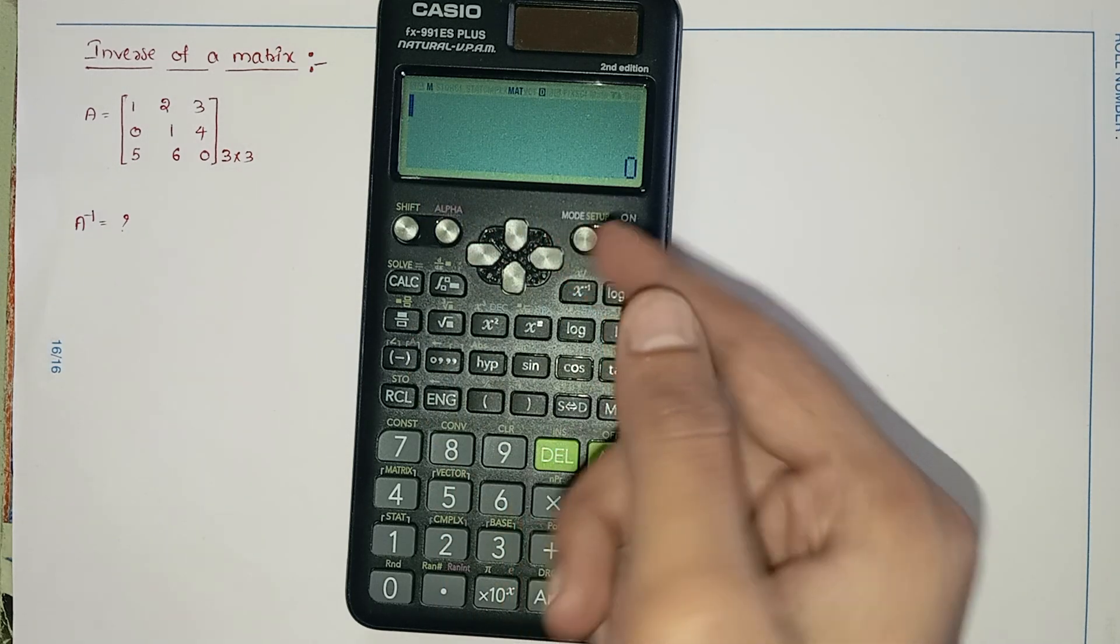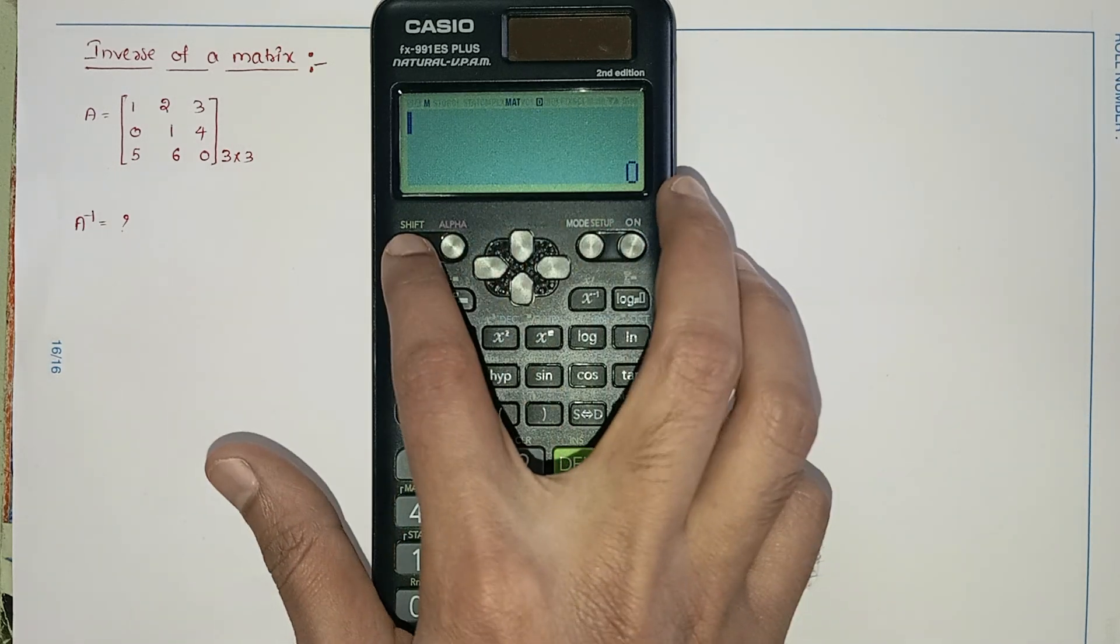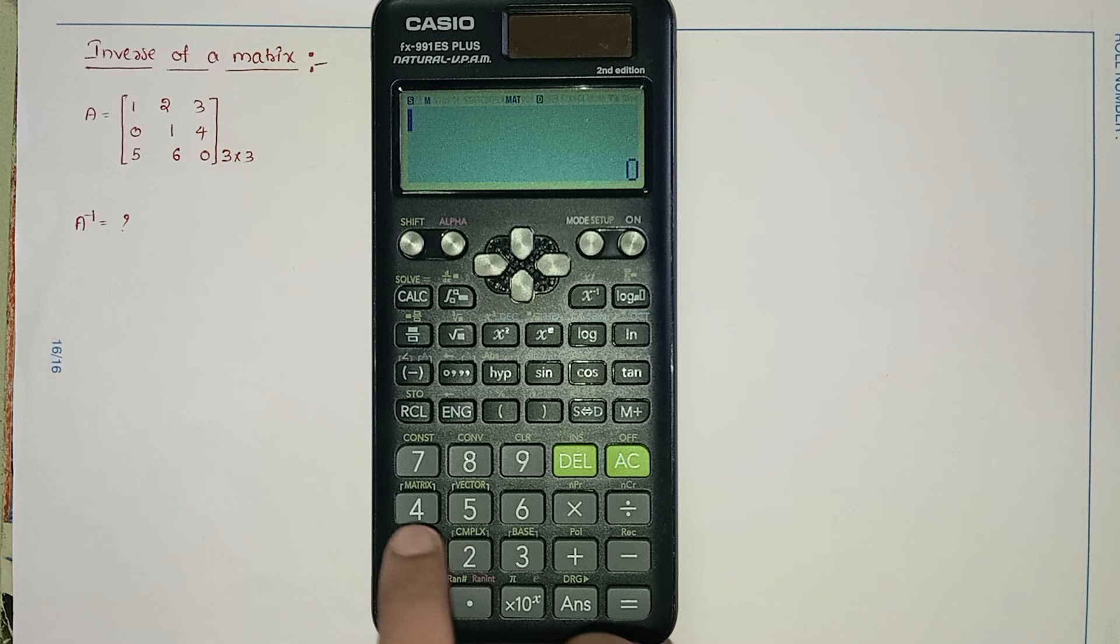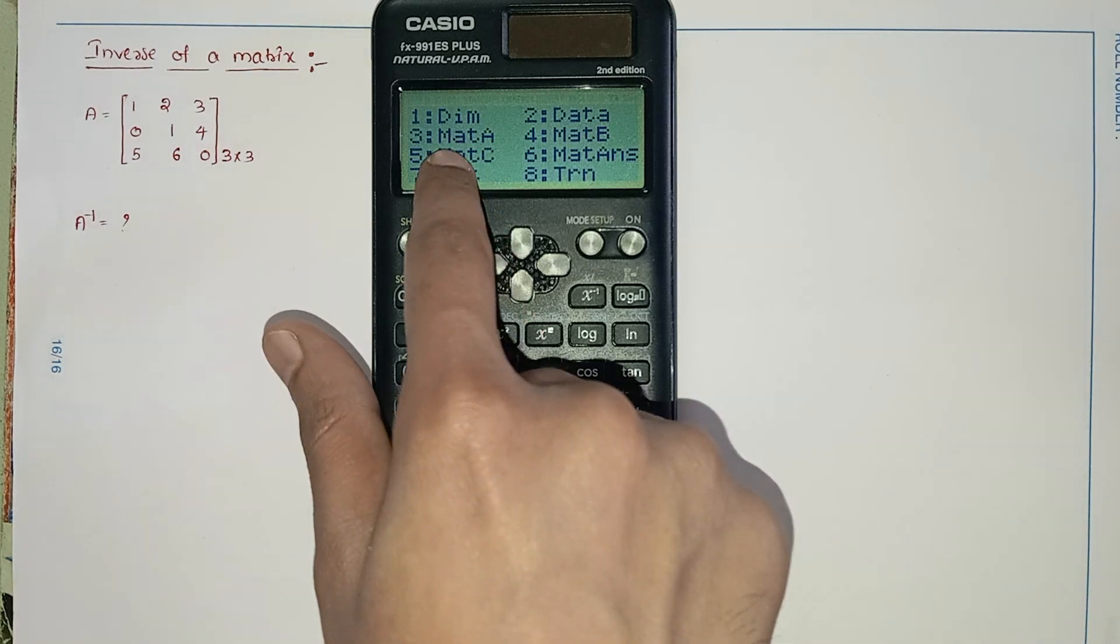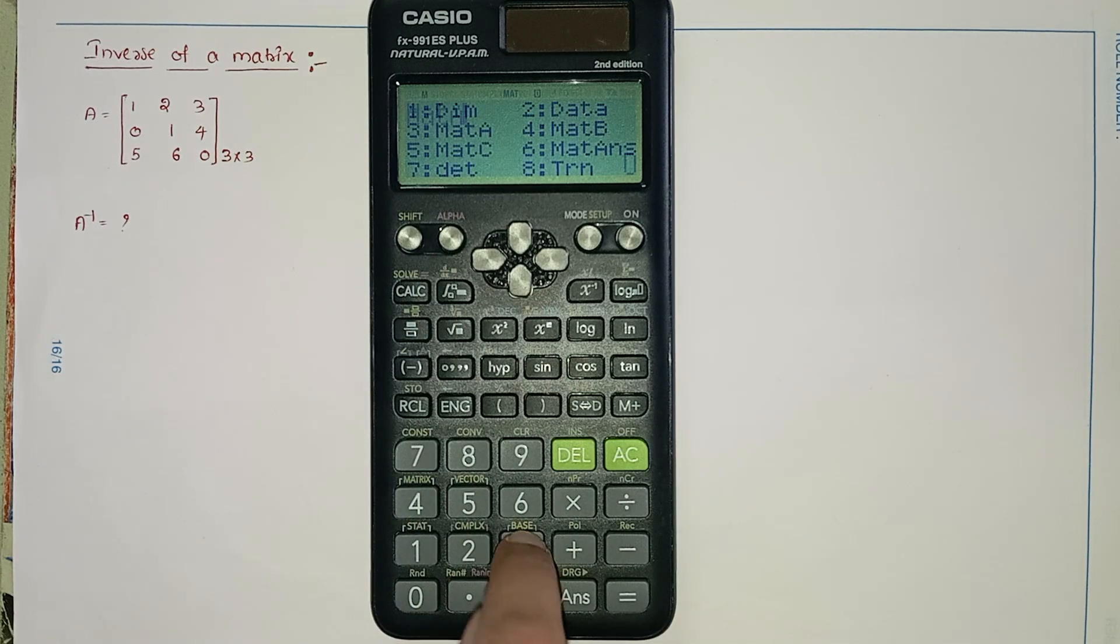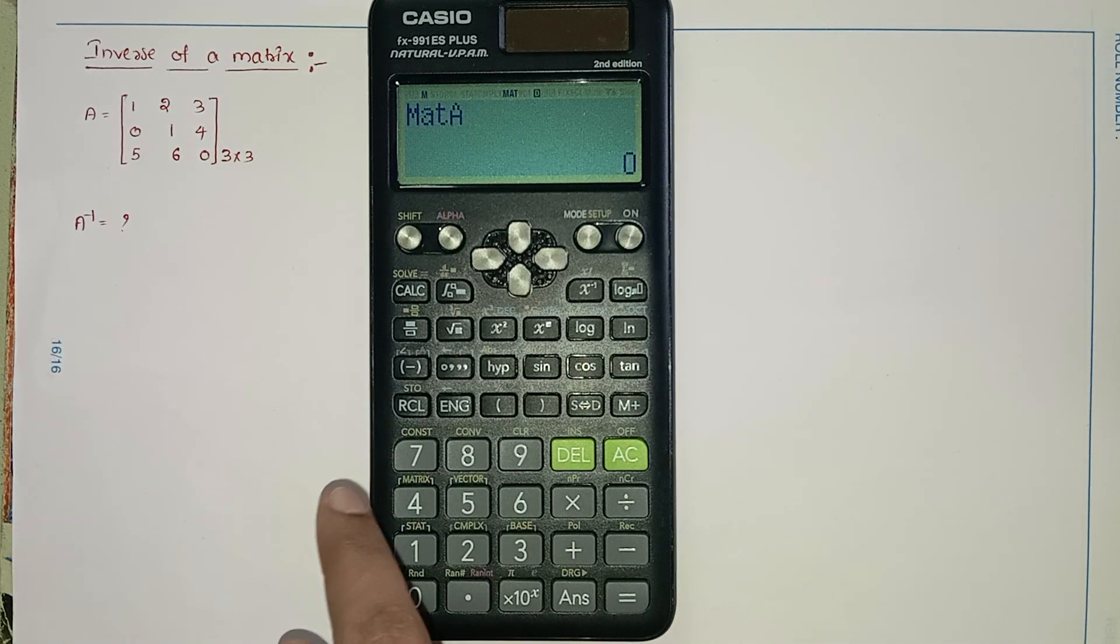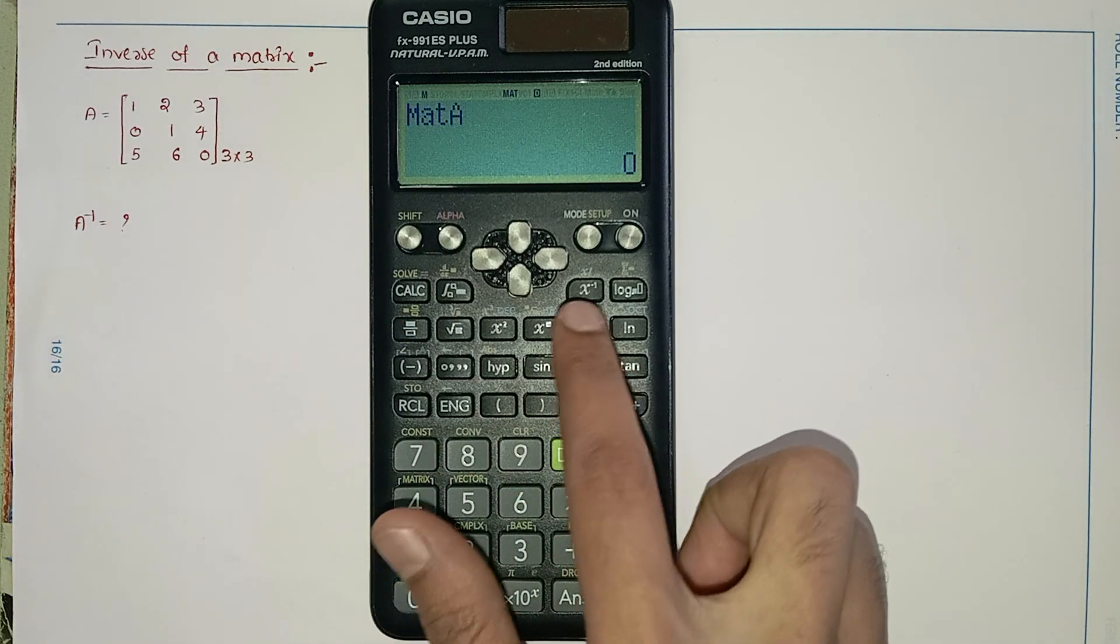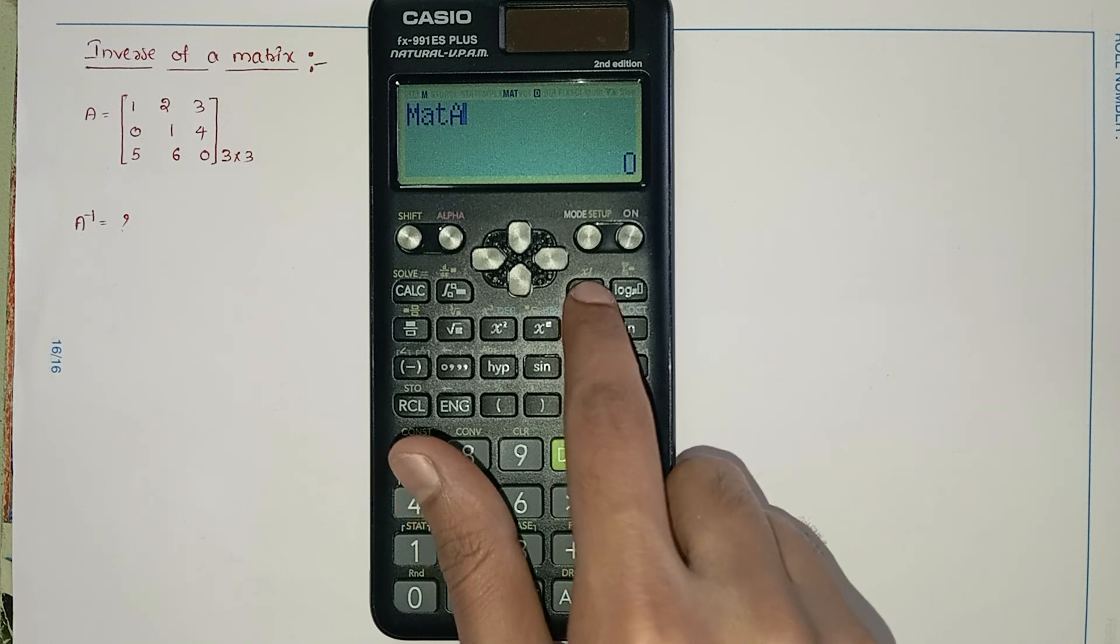Now we will find the inverse of the matrix. So press shift plus 4. We will get the matrix A because we stored the values of A in mat A. Press 3, and here we will see the inverse symbol x inverse. Press that.